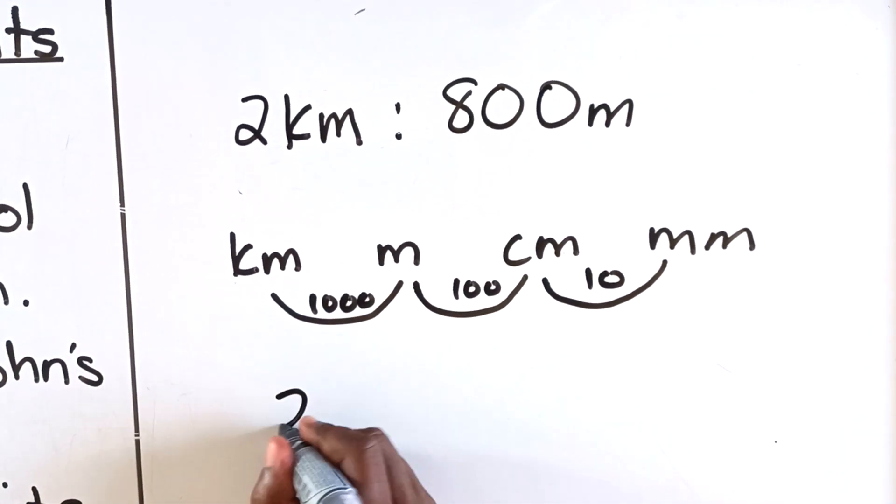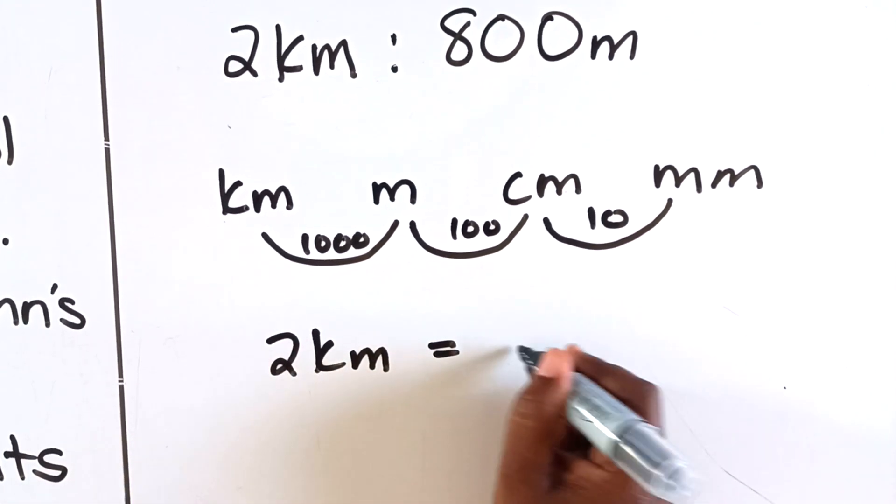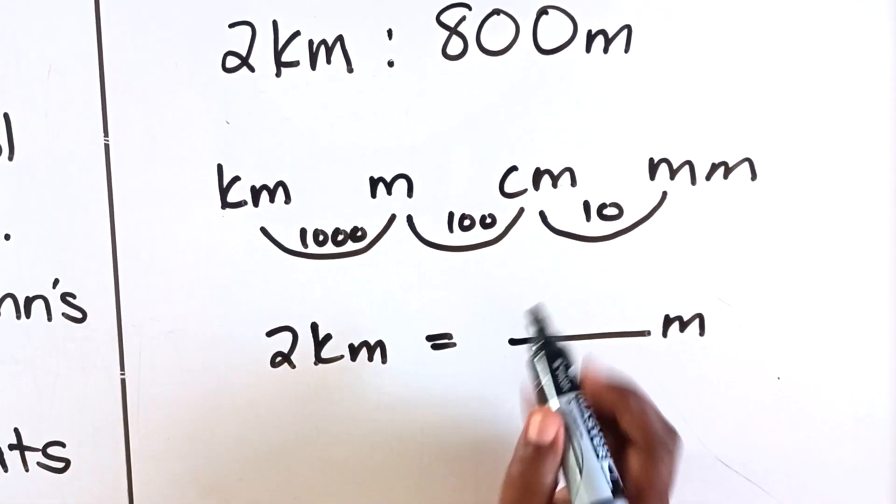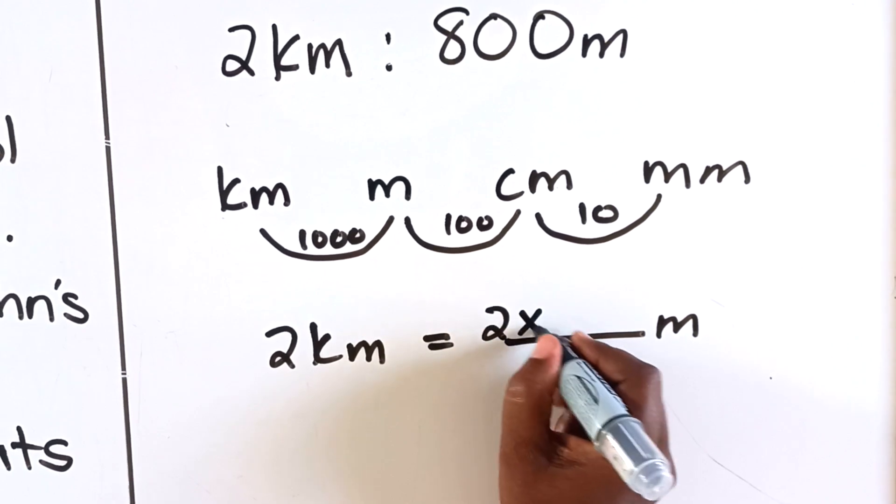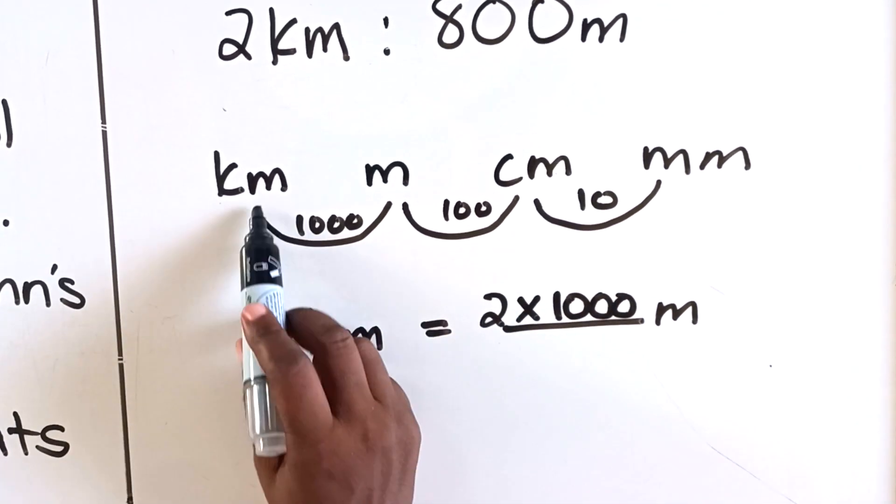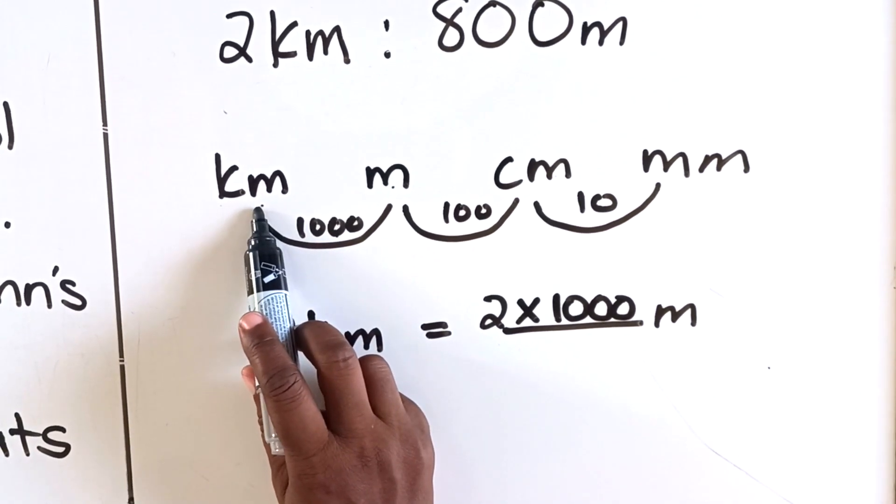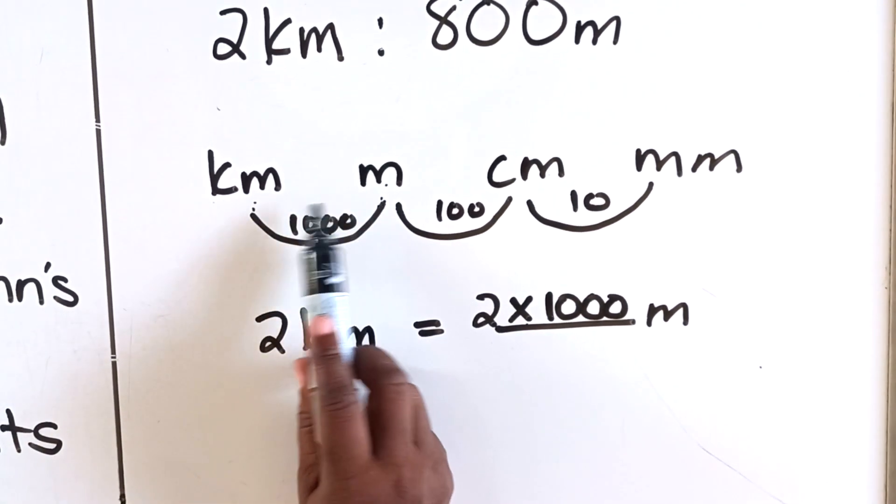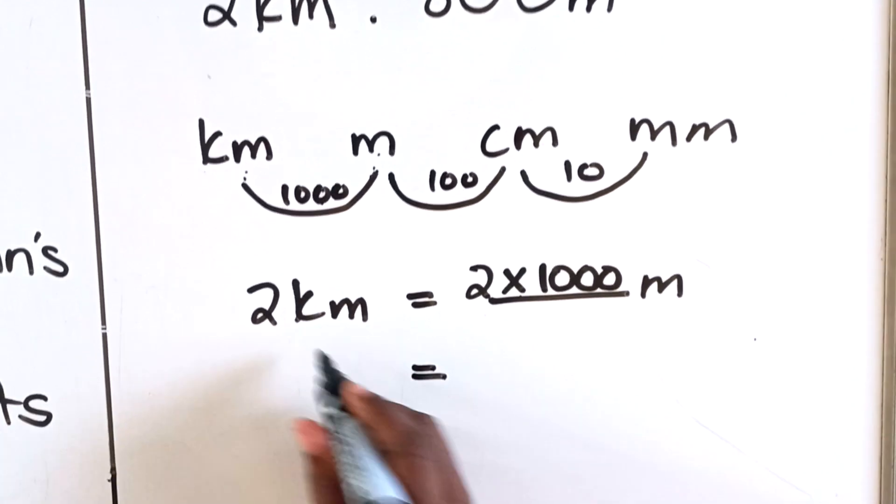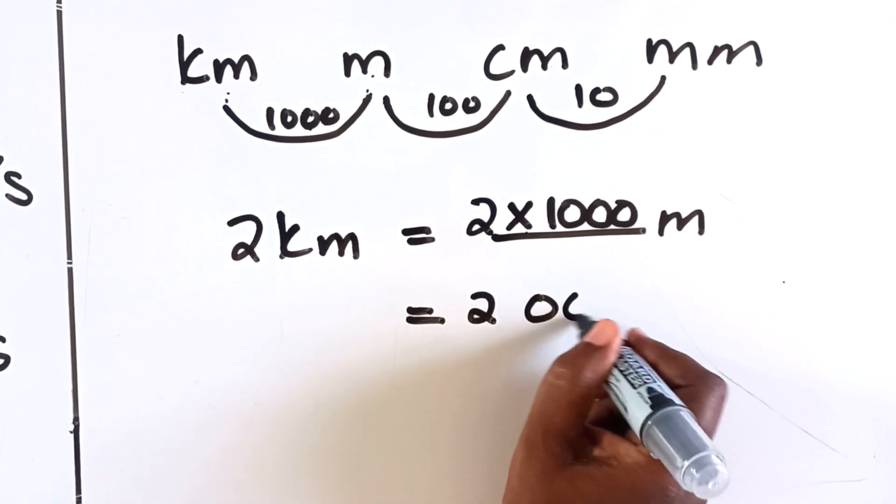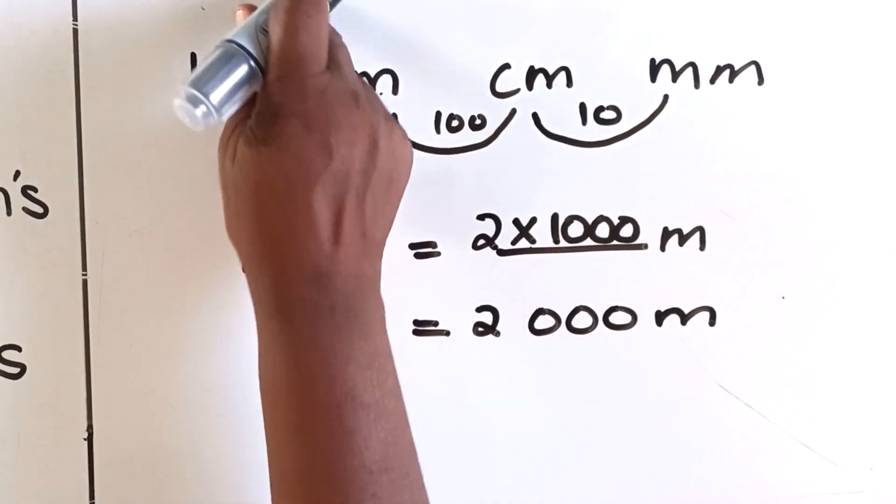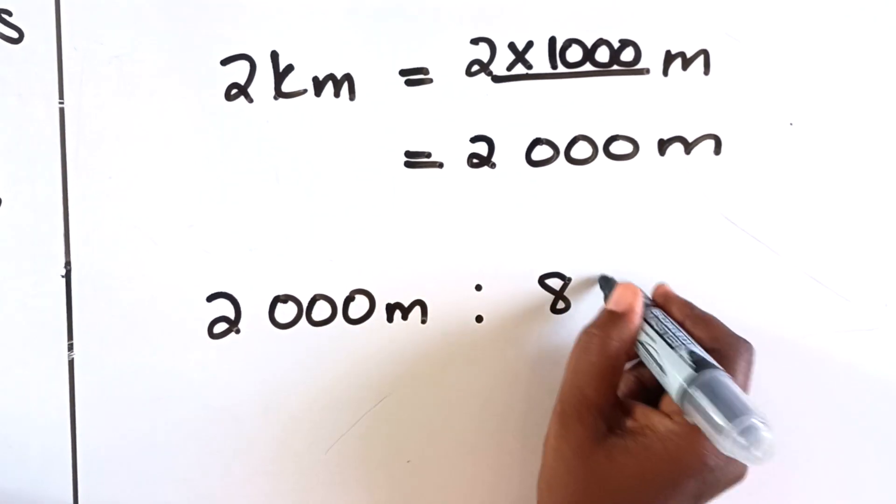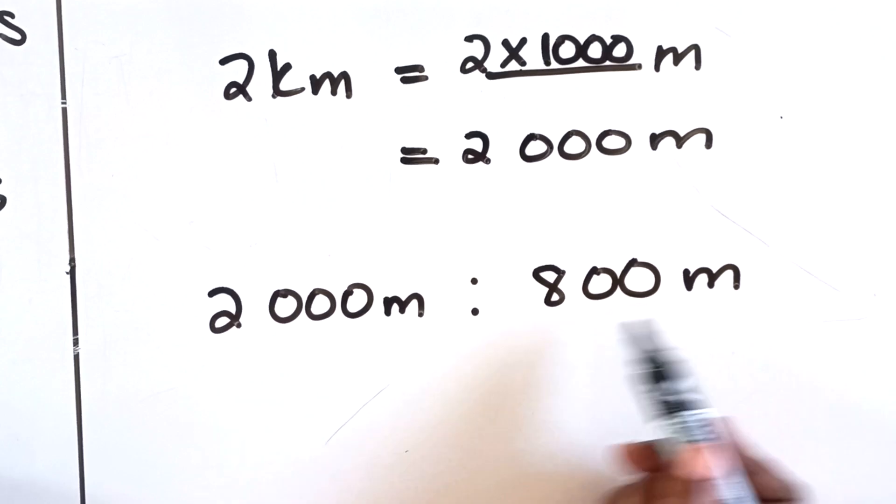Here I have 2 kilometers and I'm converting it to meters. I'm going from kilo to meter, so I'm going to multiply by 1000 because from there to there it's 1000, and I'm starting from a bigger one to a smaller one so I'm going to multiply. If I was converting meters to kilometers I would divide by 1000. So 2 kilometers is the same as 2000 meters. Then we write that back to the ratio, so it's 2000 meters to 800 meters. Now we have the same units.